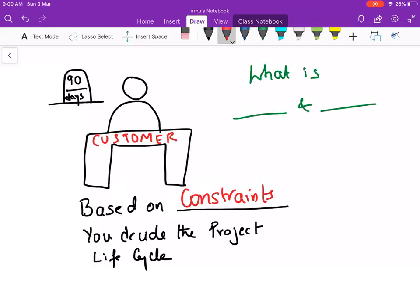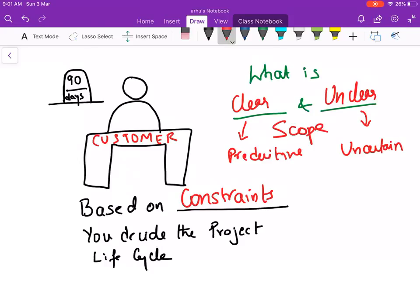Constraints will tell you what is clear and what is unclear. Which constraint am I talking about? I am talking about scope. If your scope is clear then it becomes very predictive. And if your scope is unclear it becomes unpredictive or uncertain. So then you do a different approach. With these two things in your mind you decide and you make the SOW.